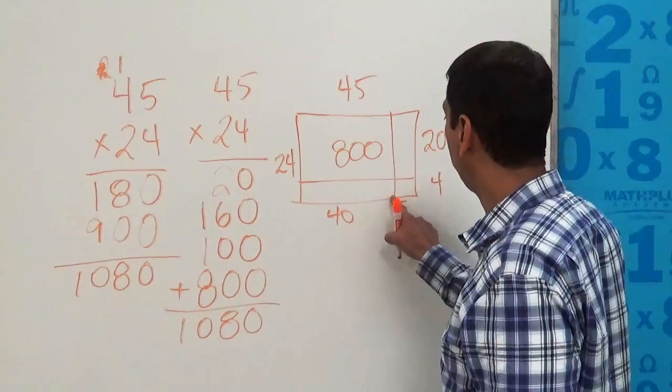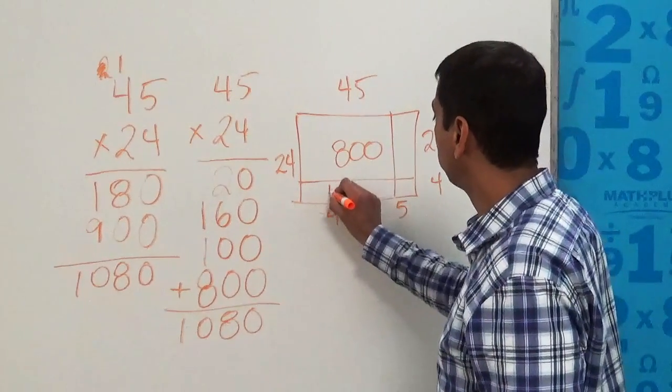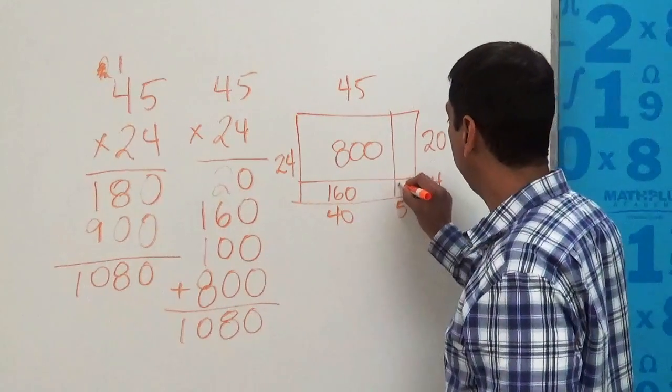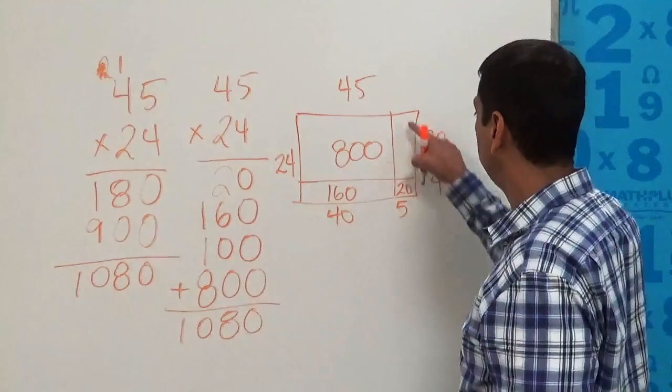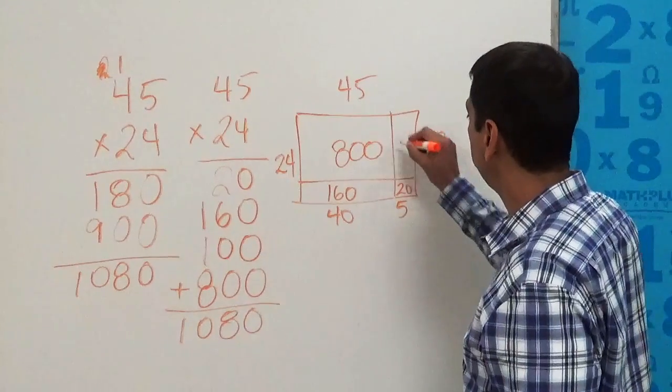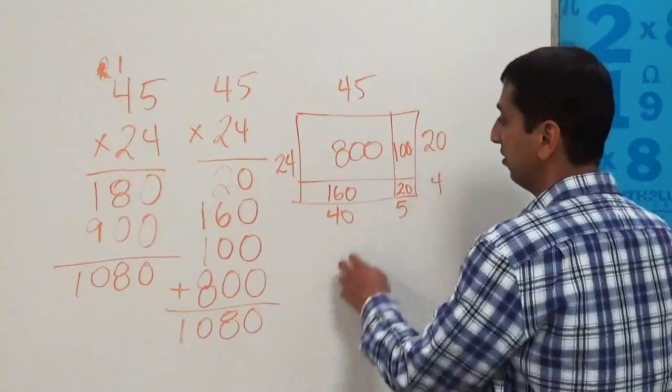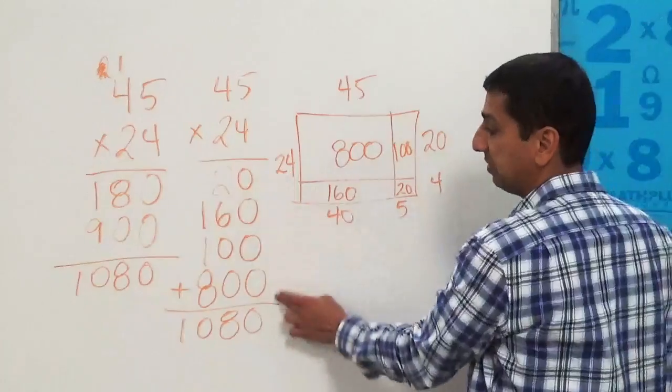This one here is 20 by 40, which is 800. This one here is 40 by 4, which is 160. The little one is 5 by 4, which is 20. And this other vertical one here is 5 by 20, which is 100.